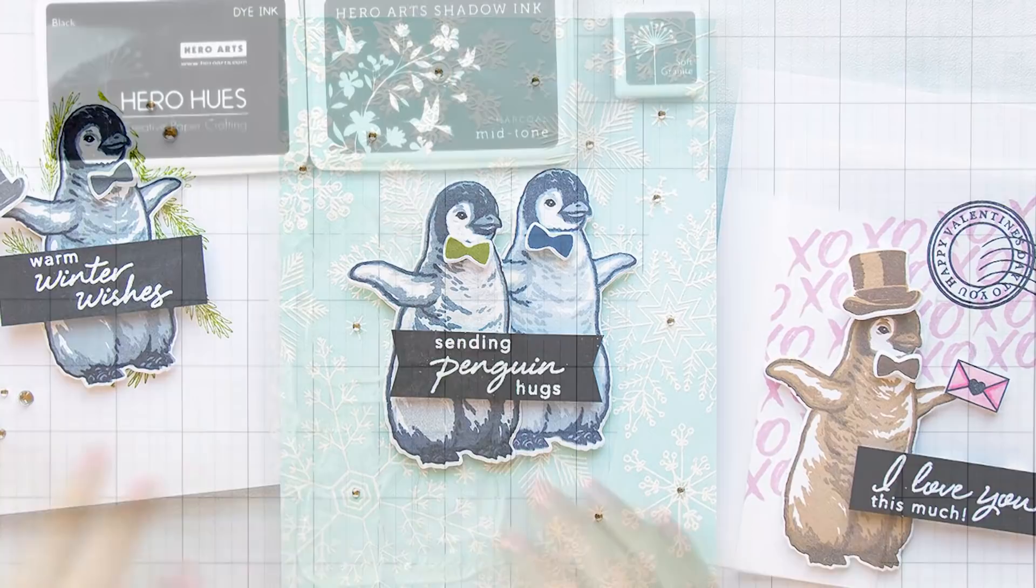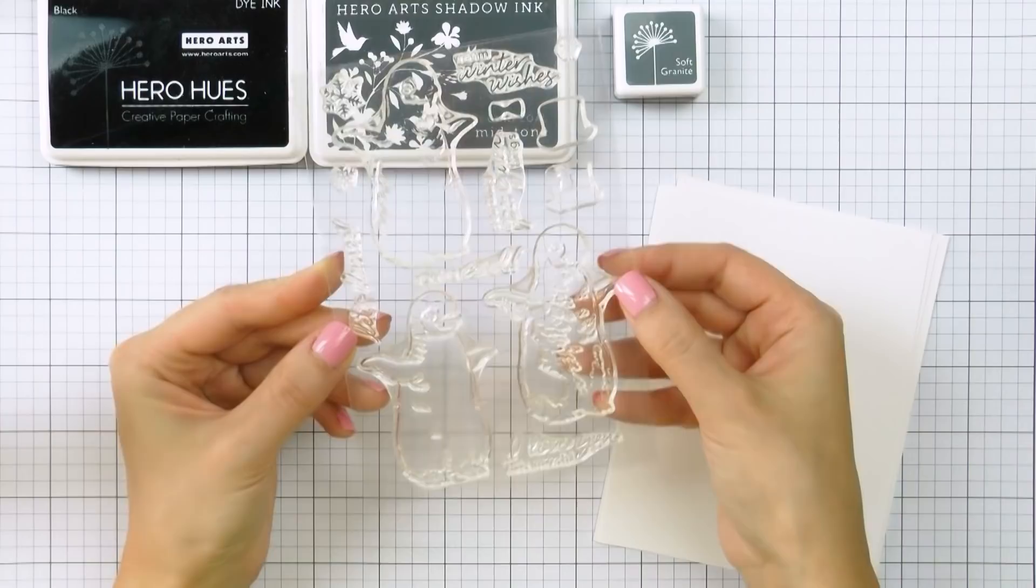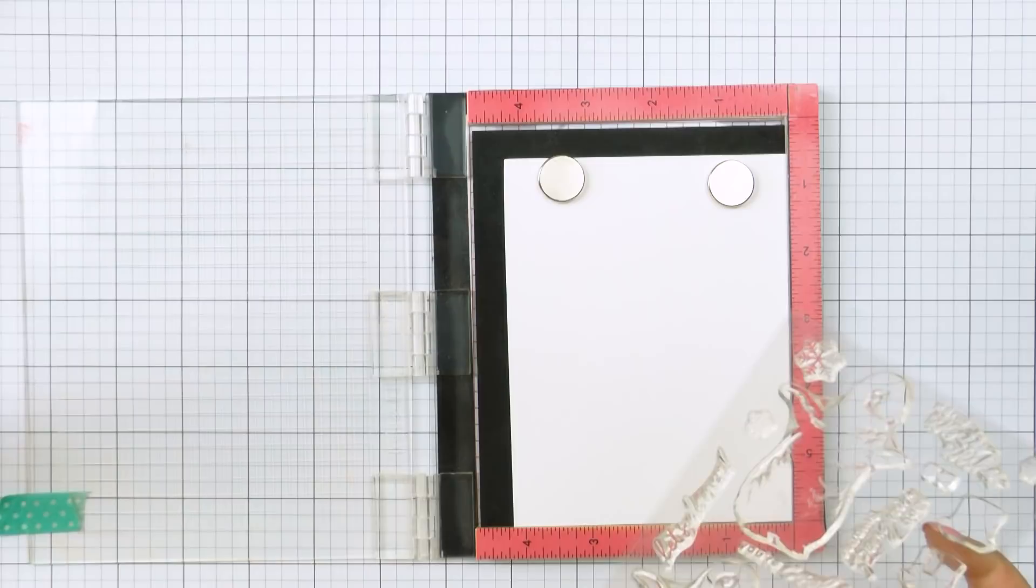This set has one large baby penguin image with 3 separate layers: an outline as well as 2 detail layers. Because there is an outline image, you also have the ability to color this penguin using your favorite coloring medium, maybe markers, pencils or watercolors. I am not going to focus on coloring today, but will only show you color layering ideas.